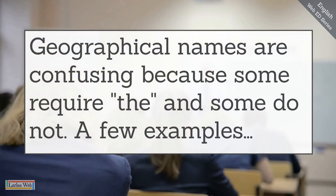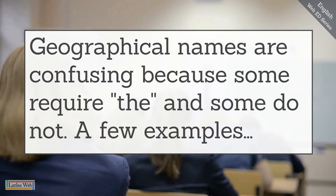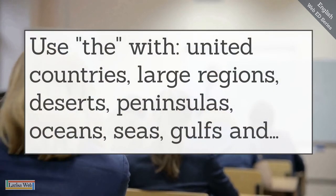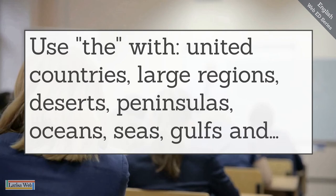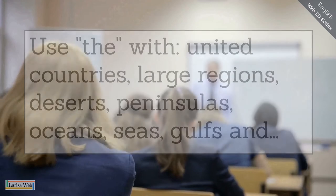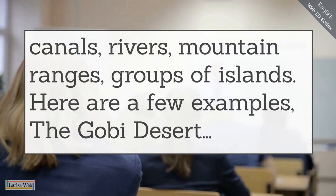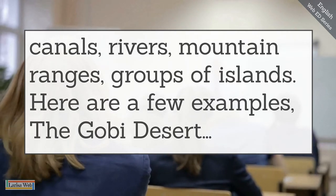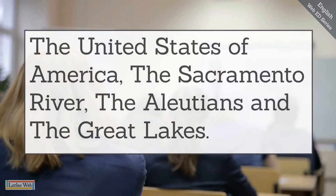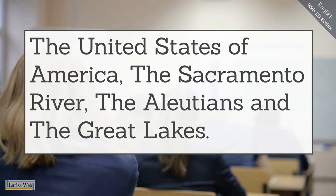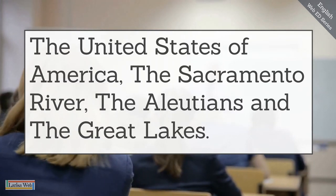Geographical names are confusing because some require the and some do not. Use the with united countries, large regions, deserts, peninsulas, oceans, seas, gulfs, canals, rivers, mountain ranges, and groups of islands. Here are a few examples: the Gobi Desert, the United States of America, the Sacramento River, the Aleutians, and the Great Lakes.